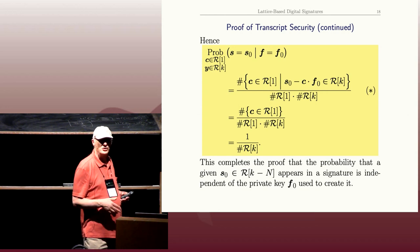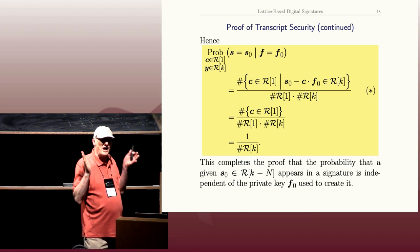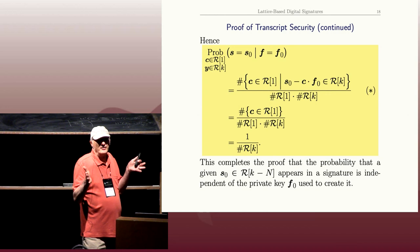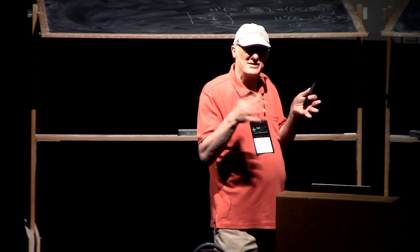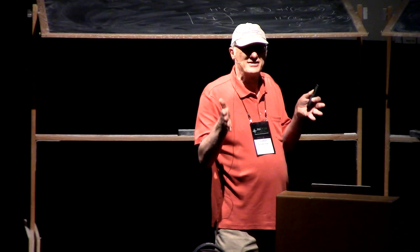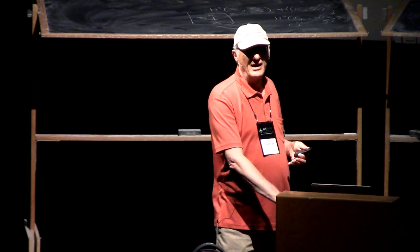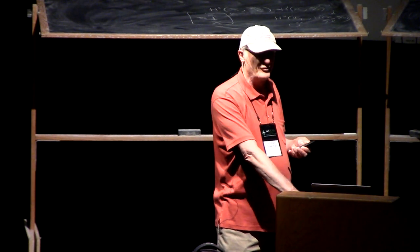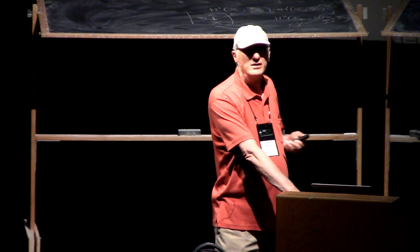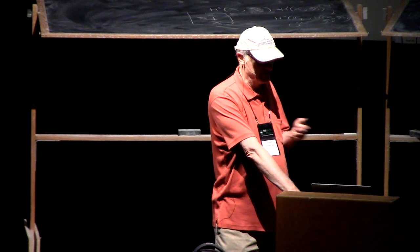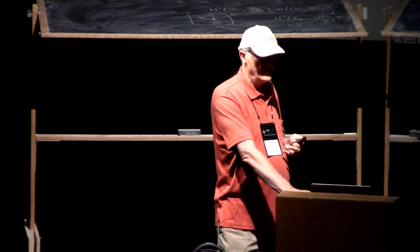And if you go back and look, in some sense what this is doing is it's created a common box for every private key. And the signatures that get through rejection sampling are sitting uniformly distributed in this common box. And therefore, different keys give the same distribution of signatures.